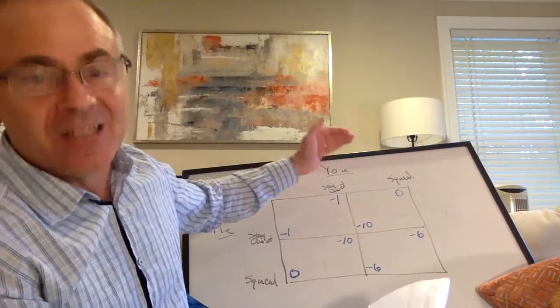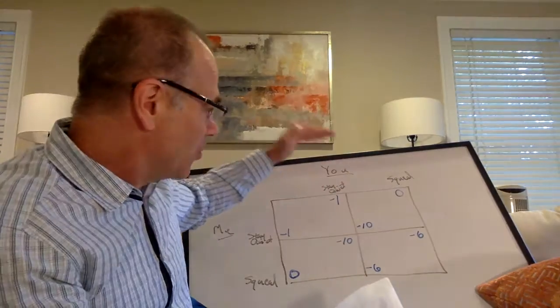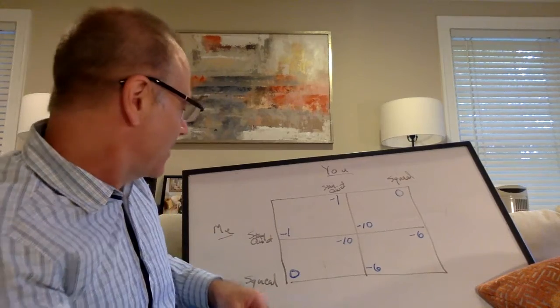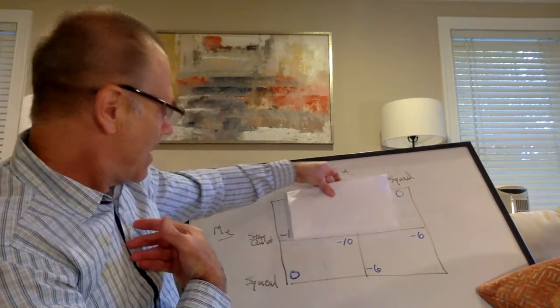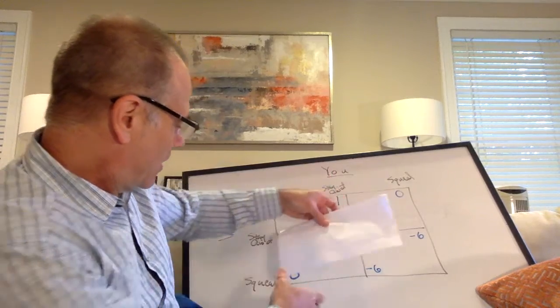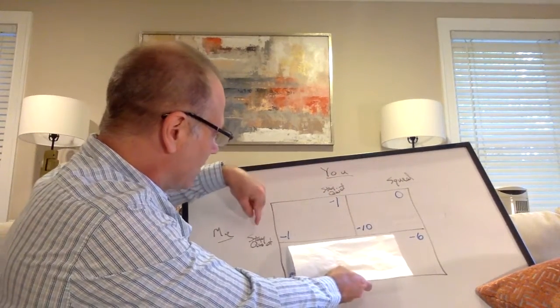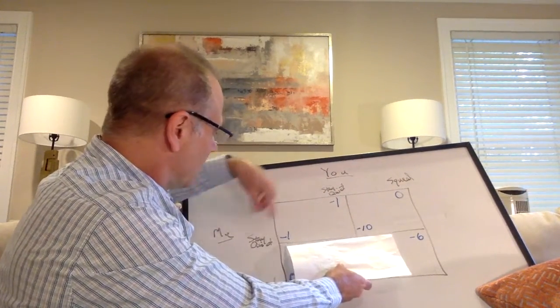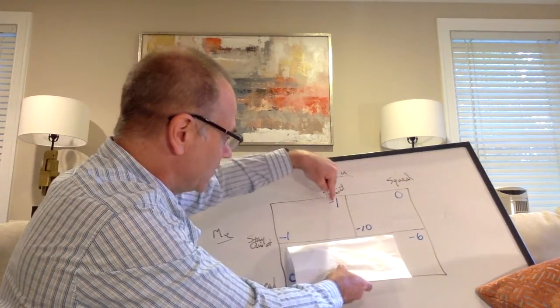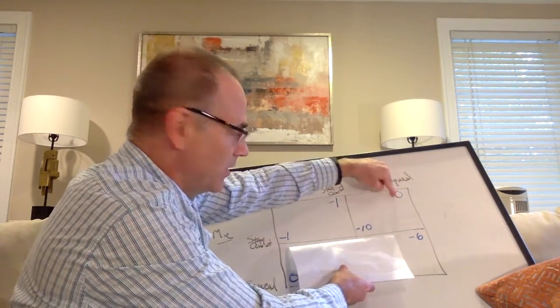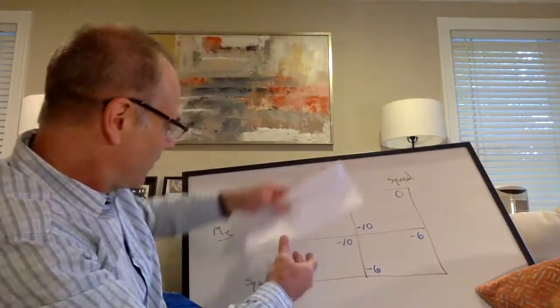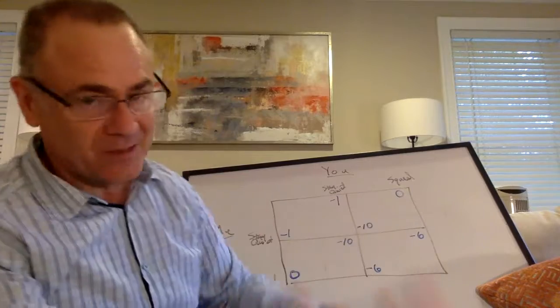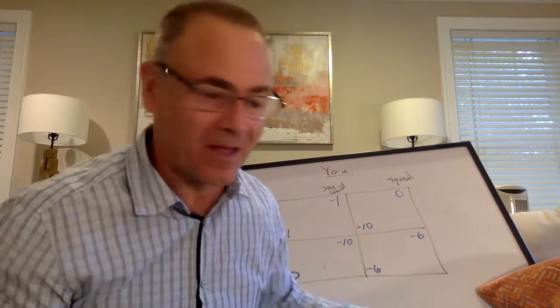If we went through the analysis of you, by the way, everything is symmetric. So if we look at your incentives, you do the same thing. You would say if you stay quiet, you get negative one. If you squeal, you get zero. Zero better than negative one. You're better off squealing. Same thing if you know I'm going to squeal. You're going to want to squeal.